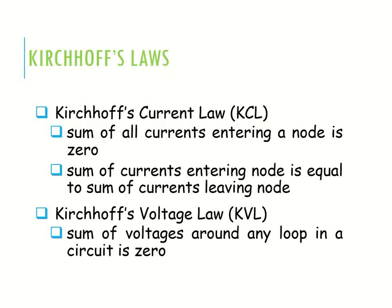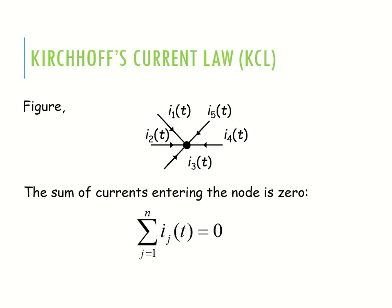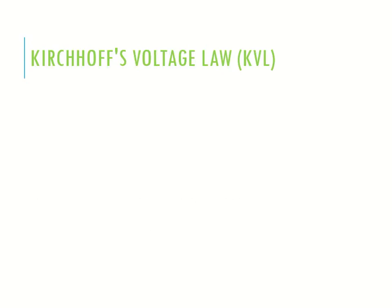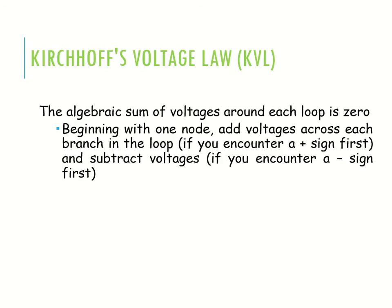There are two Kirchhoff's laws: Kirchhoff's Current Law (KCL) and Kirchhoff's Voltage Law (KVL). KCL states that the algebraic summation of currents at a node is equal to zero — in other words, the summation of all incoming currents equals the summation of all outgoing currents at the node. If there is any outgoing current, then all incoming current summation equals the summation of outgoing current.